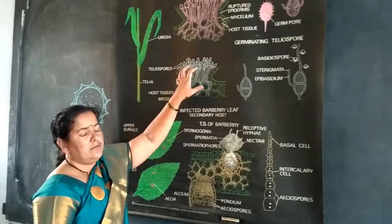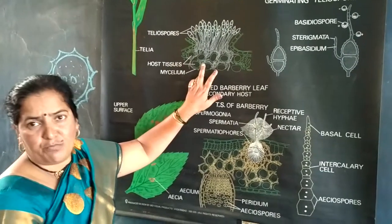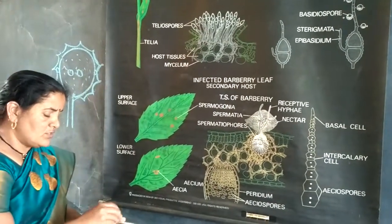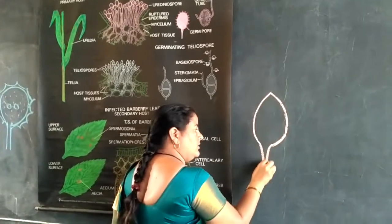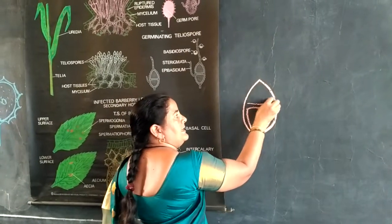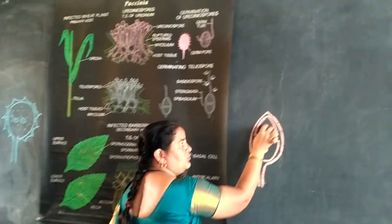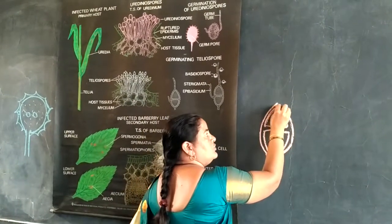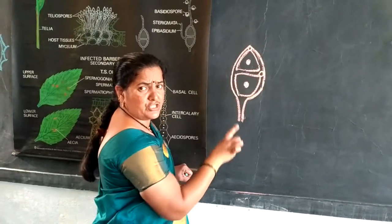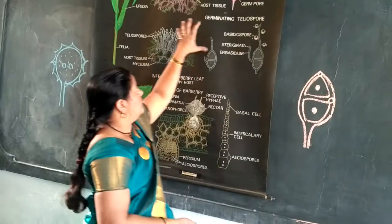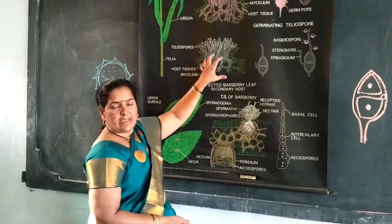In the telial stage, teliospores are produced by the telial pustule. This telial pustule is brown to black in color. The teliospores are spindle-shaped structures having a cell wall. Inside this cell wall, there are two separated cells, so these spores are bicellular, uninucleate, and diploid in nature. They show the presence of two germ pores — one is present at the tip while another is present near the partition wall. When teliospores occur in a group and come outside by rupturing the host epidermis, it is called a telial pustule.